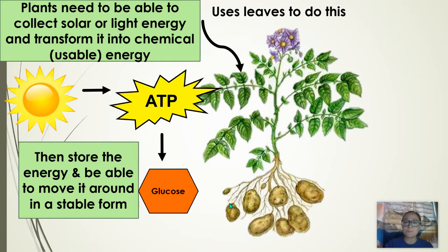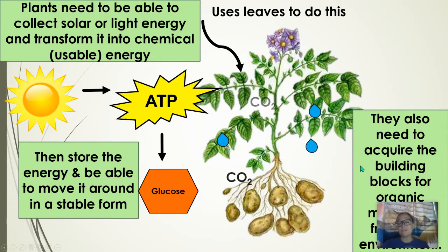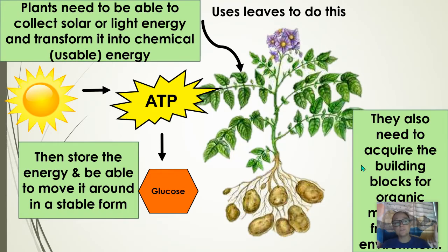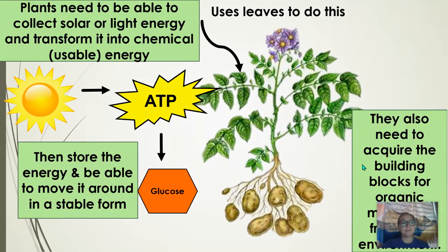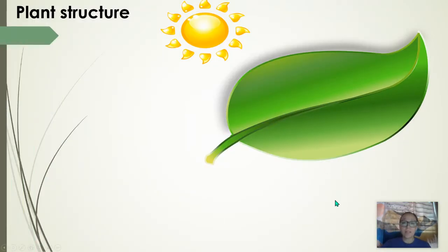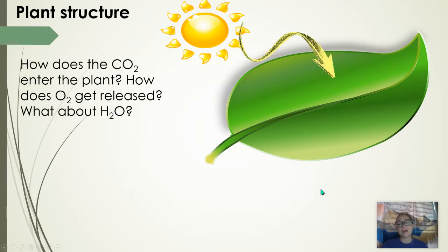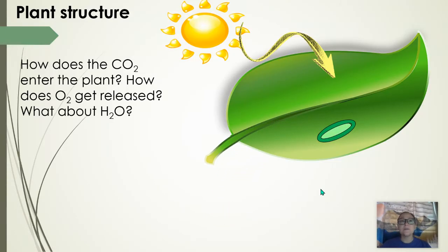In cellular respiration, we'll see how that energy is released when we break those bonds. In photosynthesis, the light reaction converts solar energy into usable energy, and the Calvin cycle saves it into larger organic molecules. Plants also need to do gas exchange. They have leaves with openings called stoma or stomata, where carbon dioxide can enter and oxygen can diffuse out.